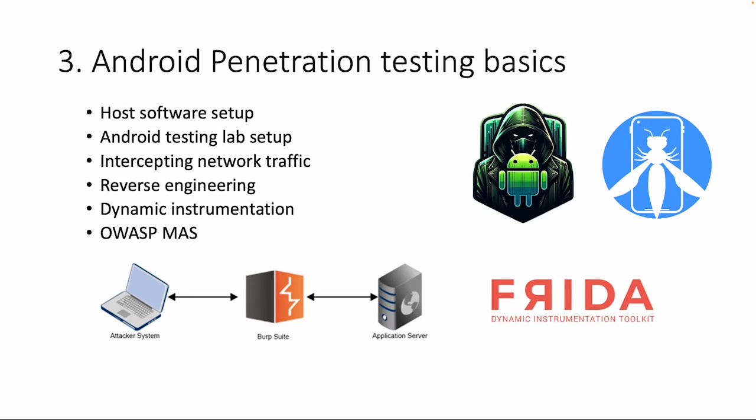Part of the pentesting basics is the host software setup — what you need on your machine or virtual machine — and the Android testing lab setup. You can use an Android device which is virtual and included in the Mobile Hacking Lab platform, or you can choose to use a physical device. One of the pentesting basics is intercepting network traffic; the most common tool for this is Burp Suite.